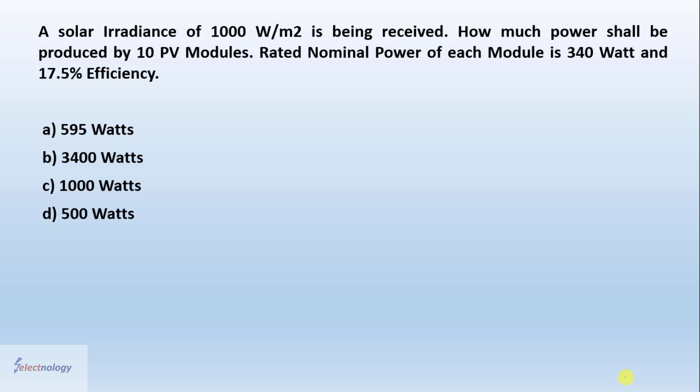Welcome back. The question is: a solar irradiance of 1000 watts per meter square is being received. How much power should be produced by 10 PV modules? Rated nominal power of each module is 340 watts and efficiency is 17.5%.